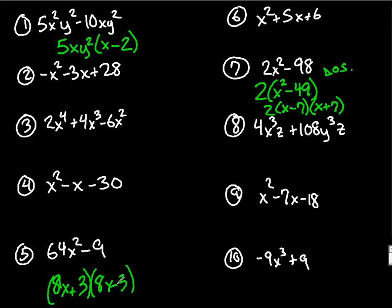For another GCF one, number 2, you can factor out, because you have a leading negative, you can definitely factor that out, which would leave you with x squared plus 3x minus 28. And now you have just a straight up polynomial. You read from right to left. What multiplies to 28 and subtracts to 3?